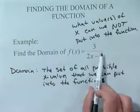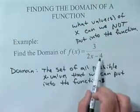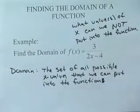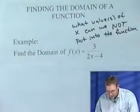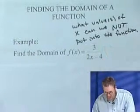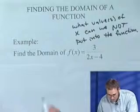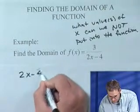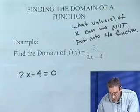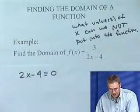I can have any number in the denominator as long as it's not equal to 0. So really, the only number that I cannot put in is the number that's going to make the denominator equal to 0. So let's figure out what number will make the denominator equal to 0.